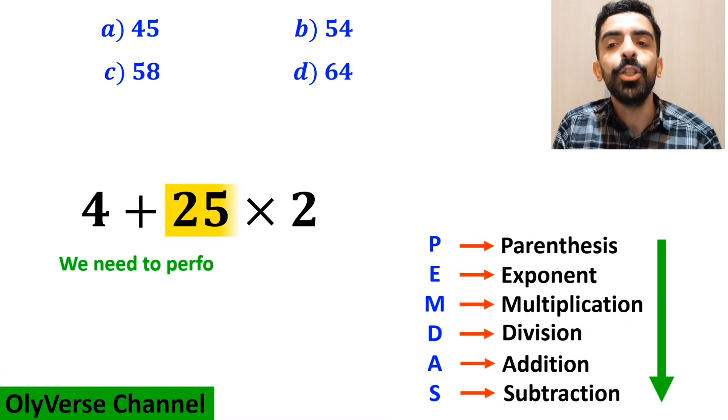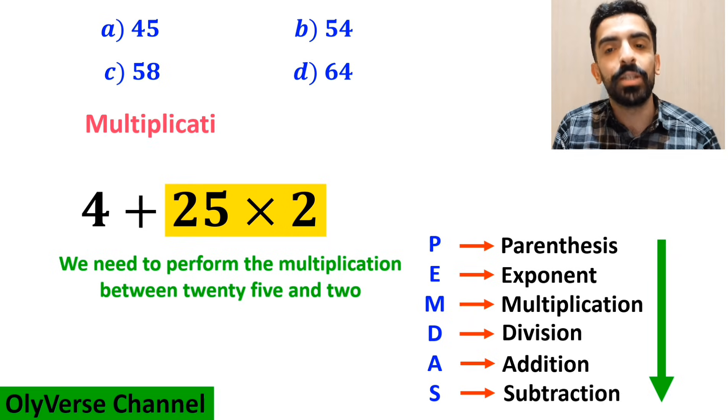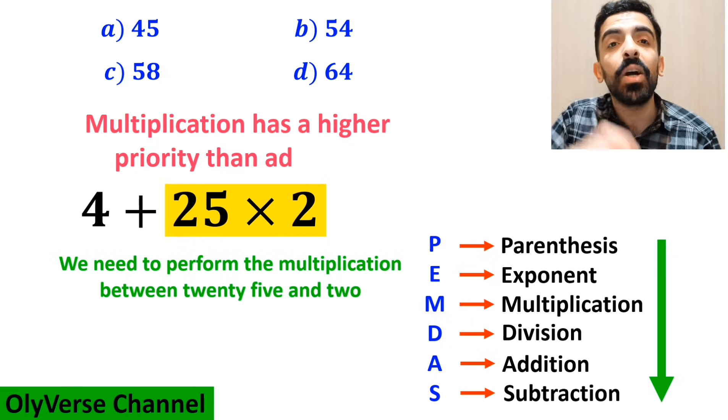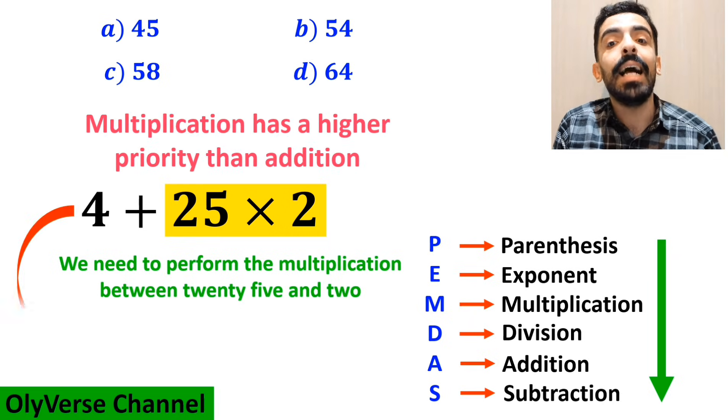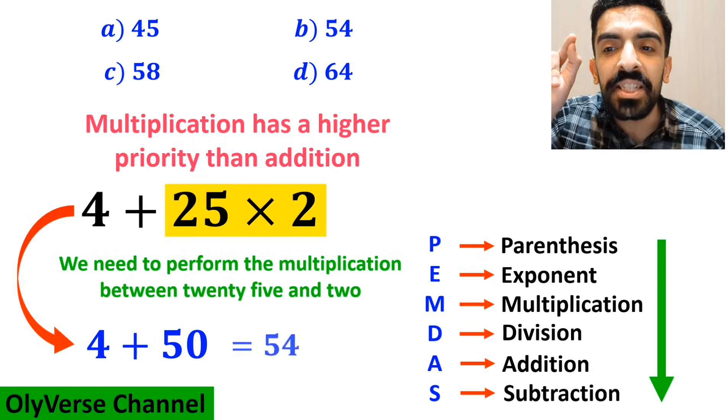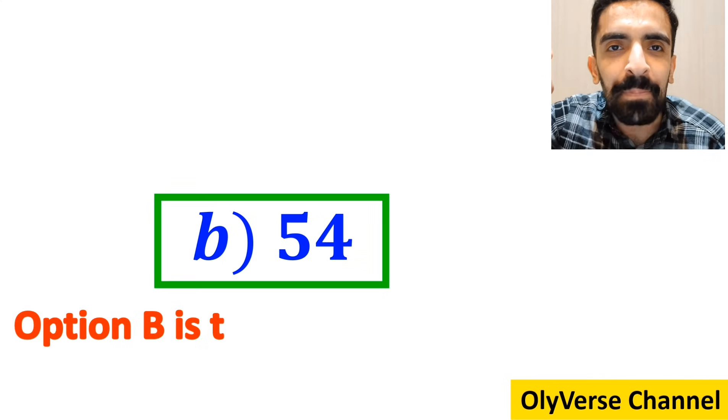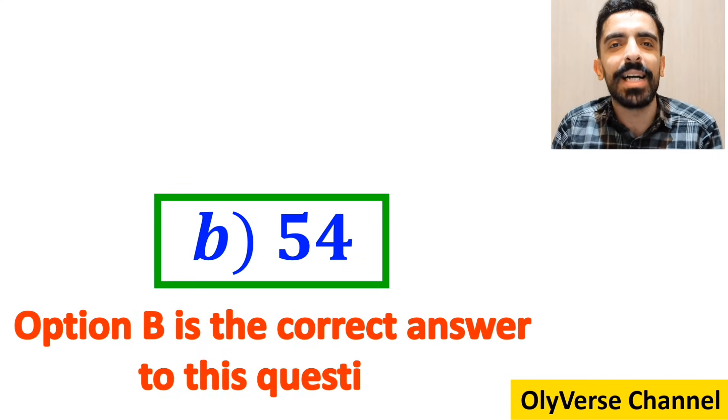In the final step, we need to perform the multiplication between 25 and 2, because multiplication has a higher priority than addition. This expression simplifies to 4 + 50, which ultimately gives us the answer 54. That's great! Option B is the correct answer to this question.